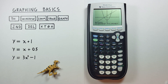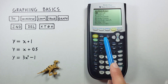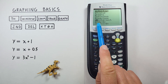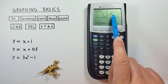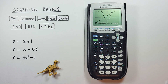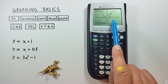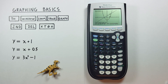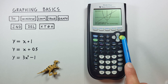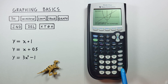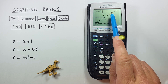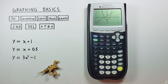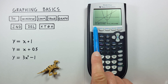We can also determine intersections. Again, with second trace, scroll down to number five — intersect. It's asking us to highlight which curves we want to intersect. We're on our first curve, that position looks good, so we hit enter. Our cursor jumps down to our second curve — that looks pretty good too, so we hit enter. It's asking us to guess roughly where our intersection will be, so we hit enter there, and it calculates our intersection point.